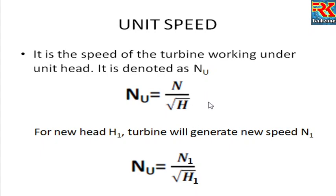The turbine works under unit speed Nu = N / √H. For example, if a turbine runs at 100 meters head and produces a certain RPM, we calculate Nu. If the same turbine runs at 150 meters head, the speed changes, but Nu remains constant for that turbine. That is why we use unit quantities — Nu is a characteristic constant for a given turbine regardless of the operating head.